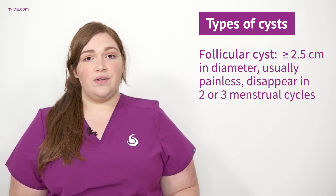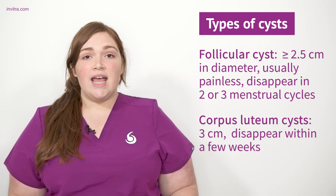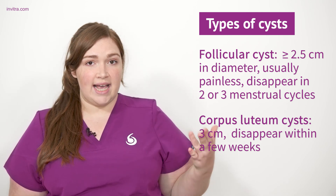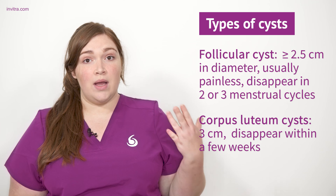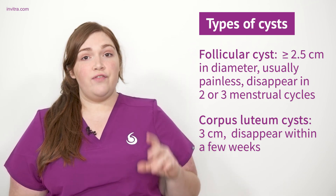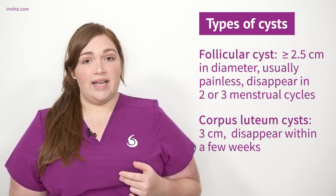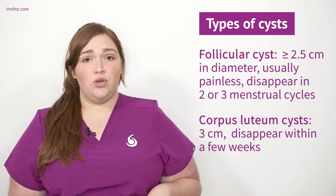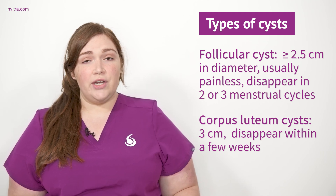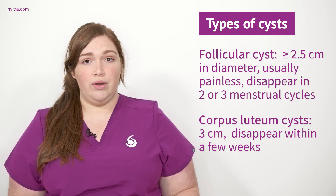Then we have a different kind of cyst called corpus luteum cysts. This cyst forms once the egg has exited the follicle — the empty follicle is filled with fluid again. These cysts are a little bigger; they can be up to 3 centimeters and they reabsorb in about two to three weeks.